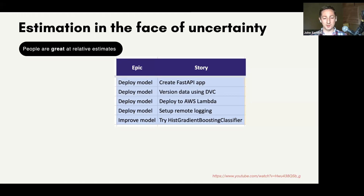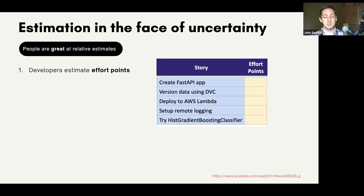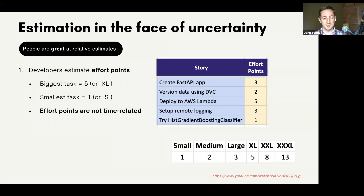The trick is that people are great at relative estimates. Here are some stories we might work on: some around deployment and trying a new LightGBM-style model now in scikit-learn. What we do is estimate effort points — also called story points, though I think 'effort points' is more descriptive. An effort point is not time, it's effort, because someone who's been coding for ten years may be faster at building a FastAPI app than someone just starting. You all agree on relative effort. I recommend t-shirt sizing: small, medium, large, and if you have to go higher. You'll notice the numbering system is a Fibonacci sequence — 1, 2, 3, 5, 8, 13 — because as we go from large to extra-large, it becomes really hard to differentiate between 4, 5, or 6 points. It reflects the uncertainty of estimating a large task.